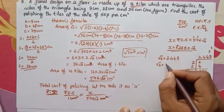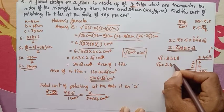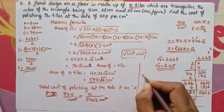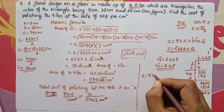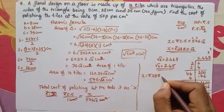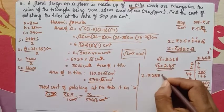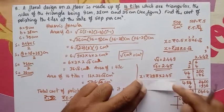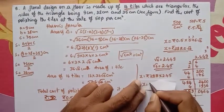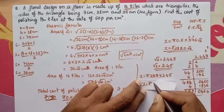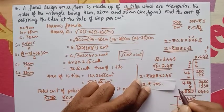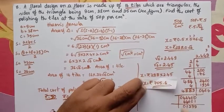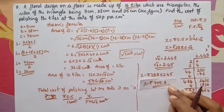Rounding √6 ≈ 2.45, the total cost x = 288 × 2.45 = Rs 705.60. This is your final answer.